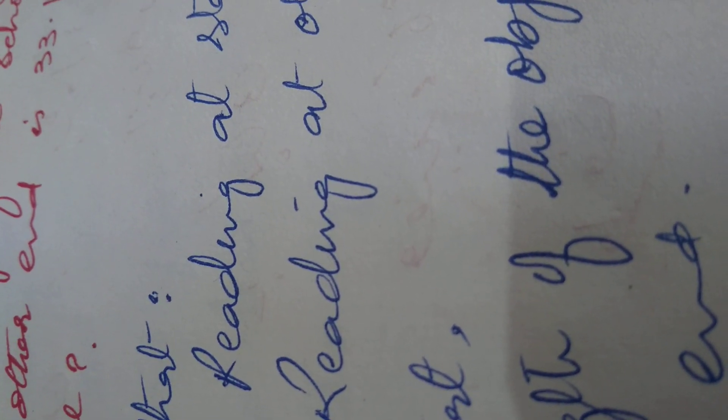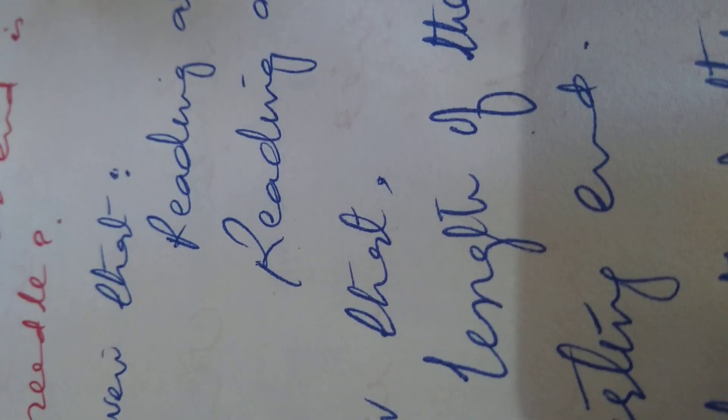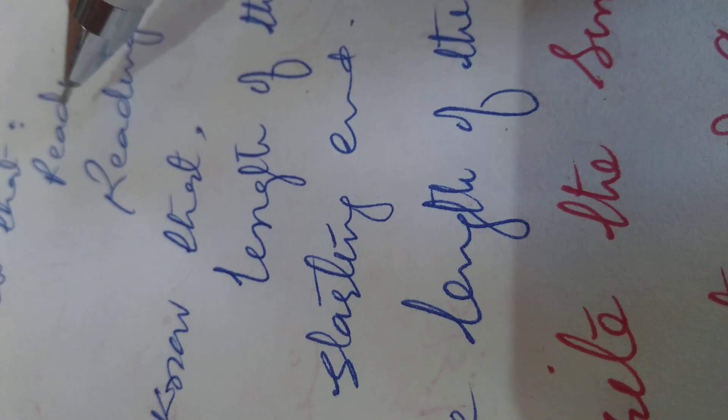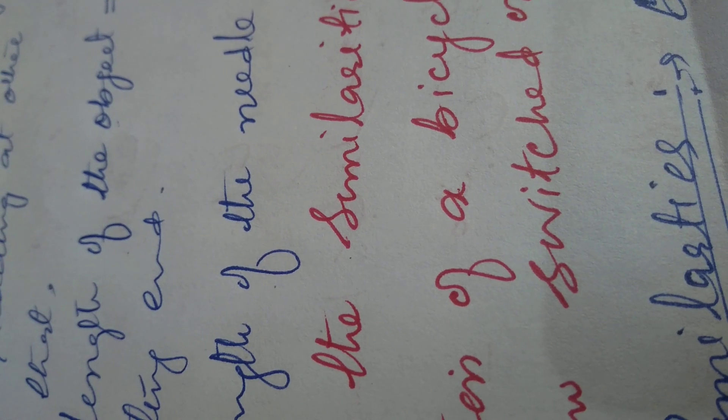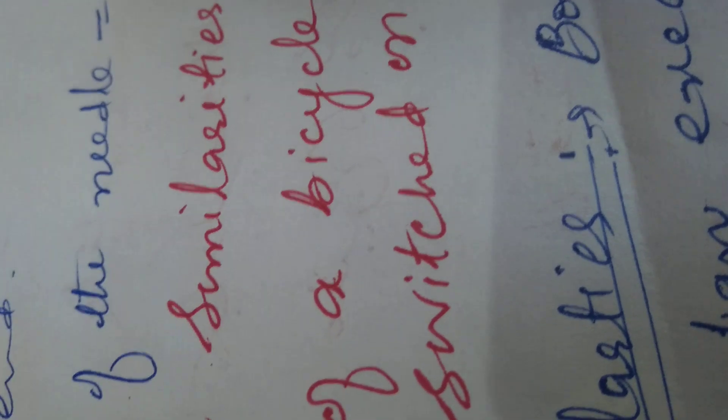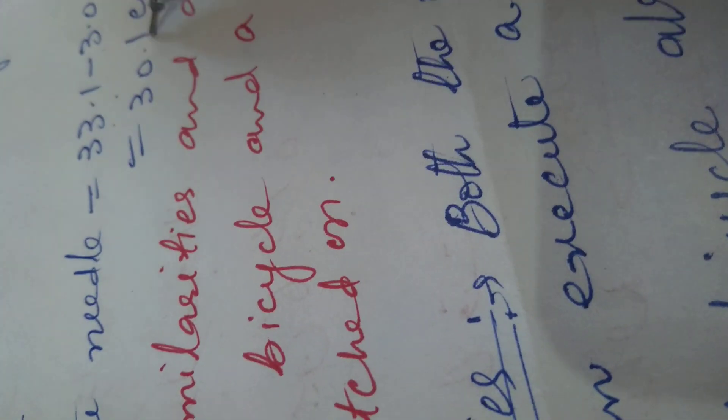Question number 6: While measuring the length of a knitting needle, the reading at one end is 3.0 centimeters and the other end is 33.1 centimeters. The length of the needle equals the reading at the other end minus the reading at the starting end: 33.1 minus 3.0 equals 30.1 centimeters.